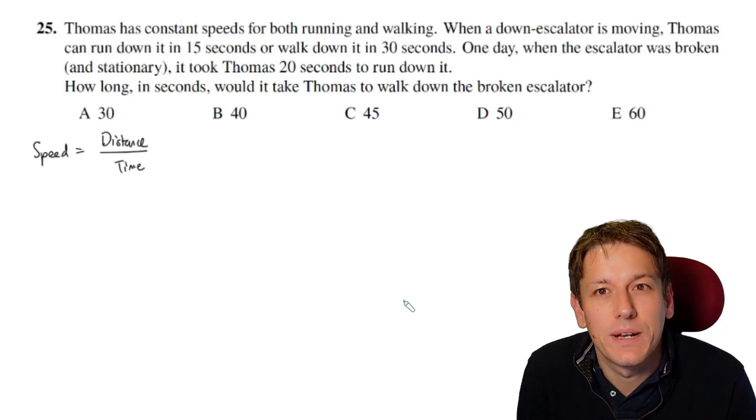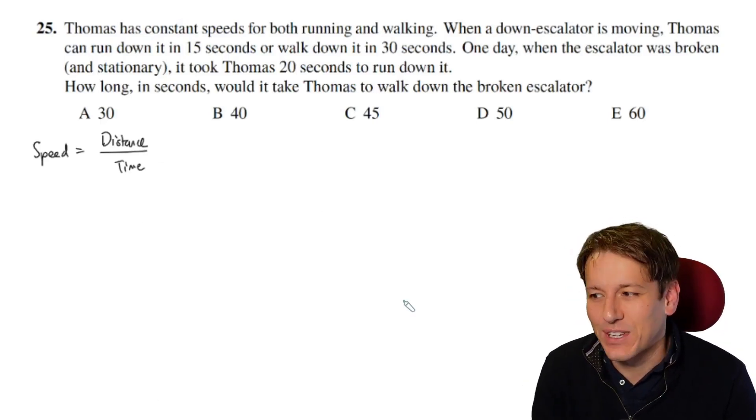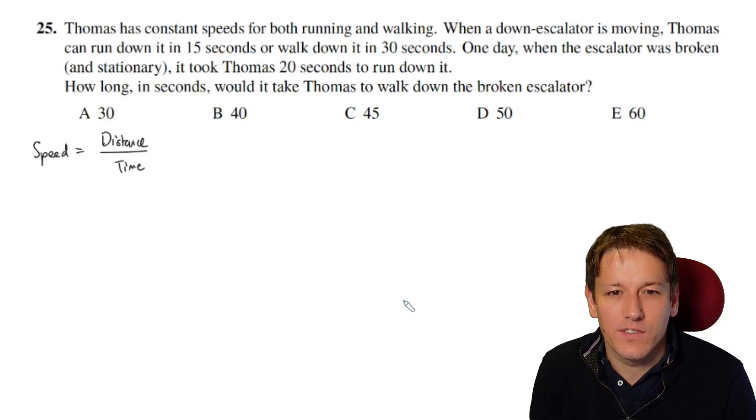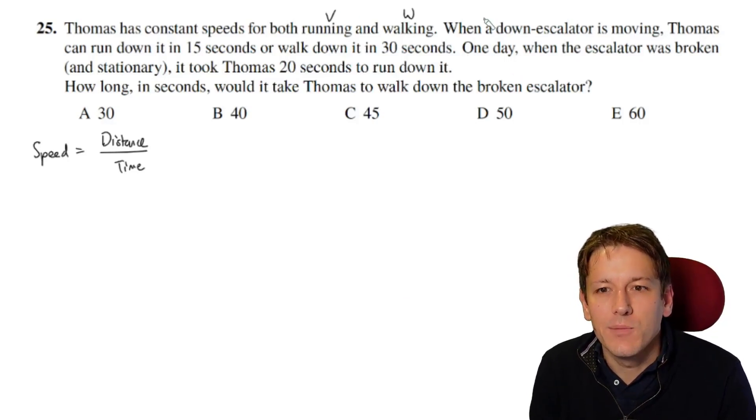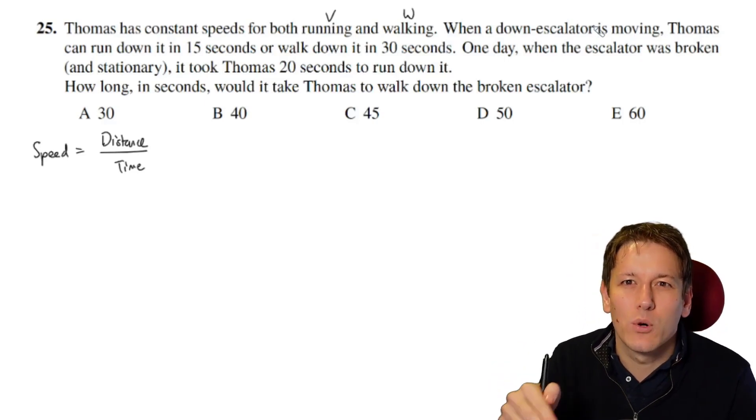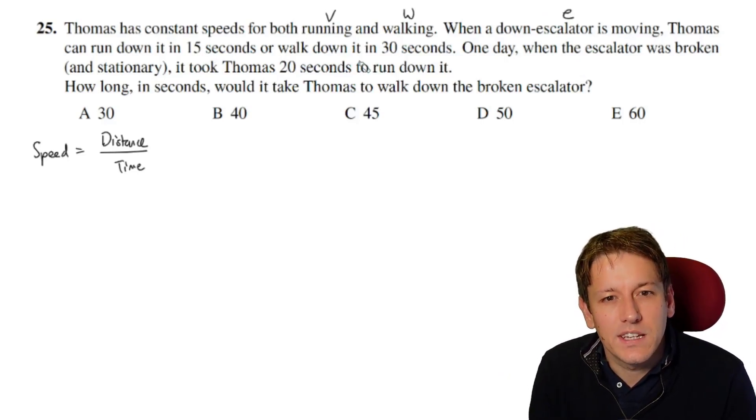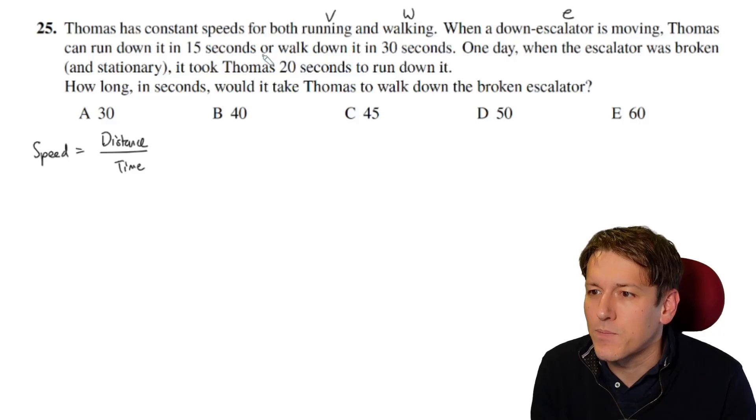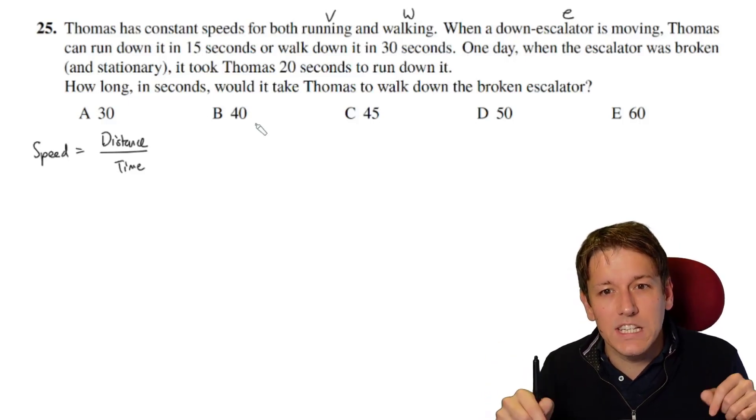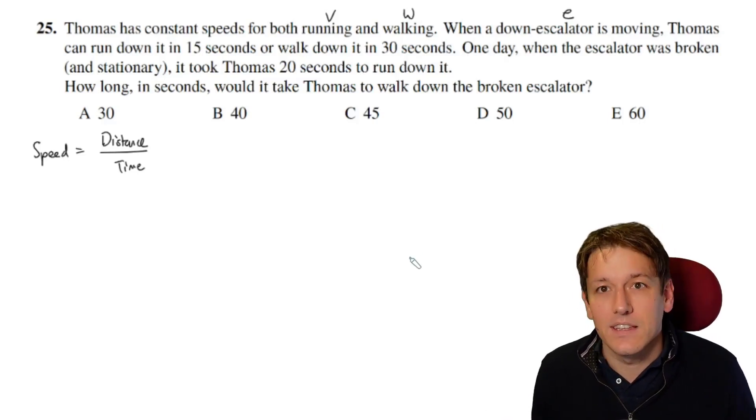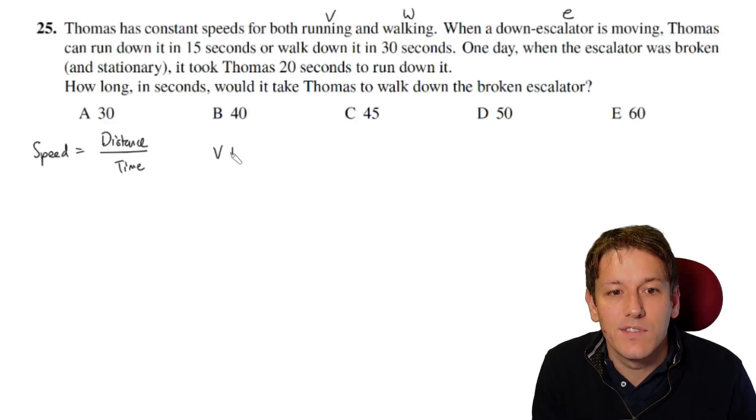So in this question we're really just going to use this formula speed equals distance over time over and over again. But it is a tricky question. So we will have to take quite a lot of care. So Thomas has these constant speeds for both running and walking. So let's call his running speed v and his walking speed w. And it says when the down escalator is moving, so the escalator is going to be also having a certain speed that it's moving at. Let's call that e for escalator. Then he can run down it in 15 seconds or walk down it in 30 seconds. So let's write speed equals distance over time for each of these pieces of information. So if he's running down the escalator, he's going to be getting his running speed and also the speed of the escalator. They will combine together to give his total speed. So we'll have the v plus e is equal to, now we don't know the length of the escalator, so let's just call that x and say that and divide that by 15.